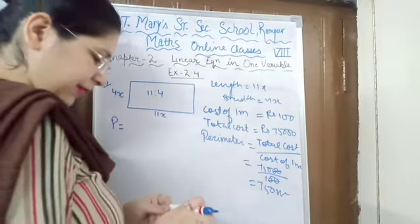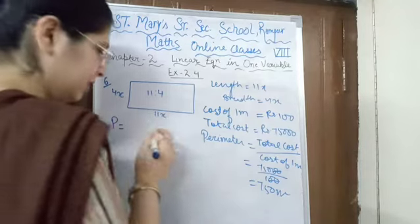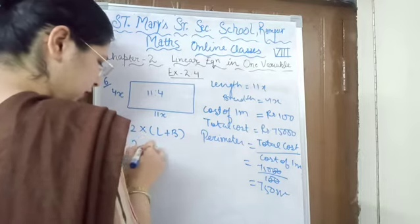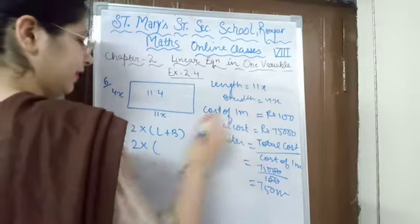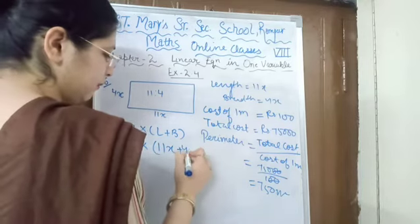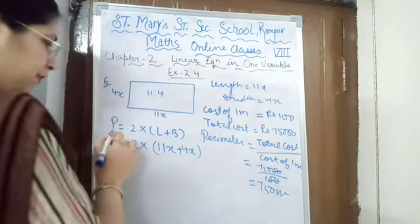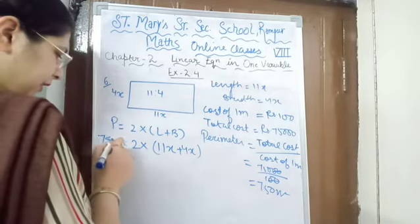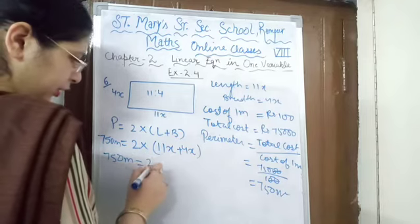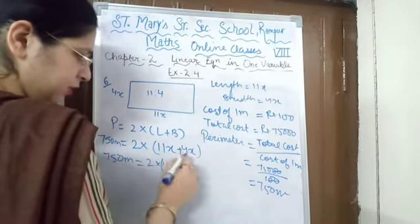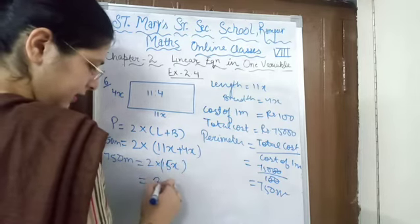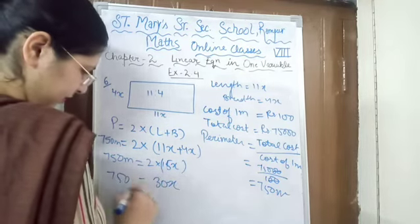The formula for perimeter of a rectangle is 2 multiplied by (length + breadth). Length is 11X and breadth is 4X, and perimeter is 750 meters. So: 2 into (11X + 4X) = 750. That gives 2 into 15X = 750, which is 30X = 750.